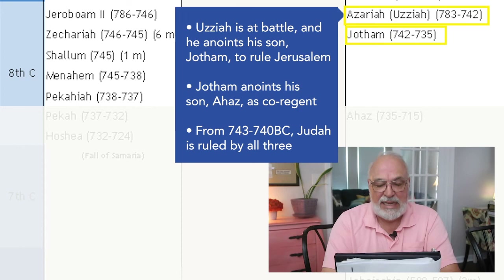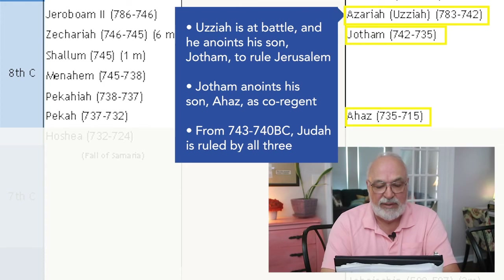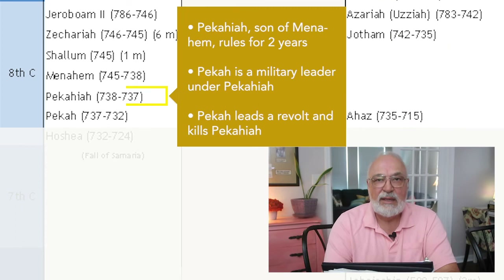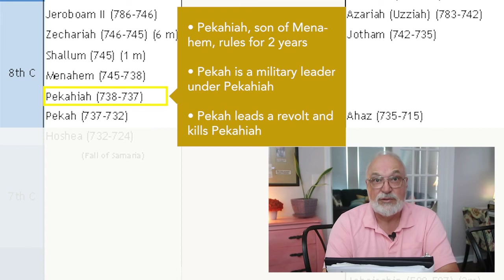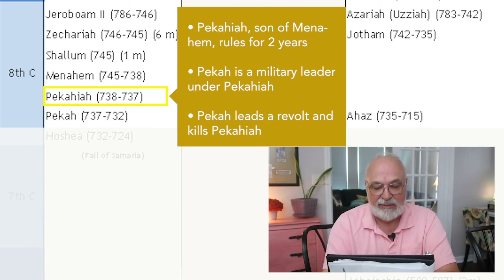Thus during this period from 743 to 740 BC, Uzziah, Jotham, and Ahaz rule the southern kingdom together. Menahem dies and his son Pekahiah rules for two years. Pekah, the rival of Menahem, is a military leader under Pekahiah. Pekah leads a revolt and kills Pekahiah.